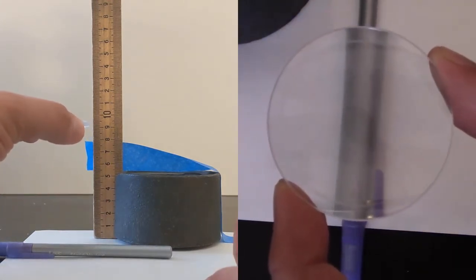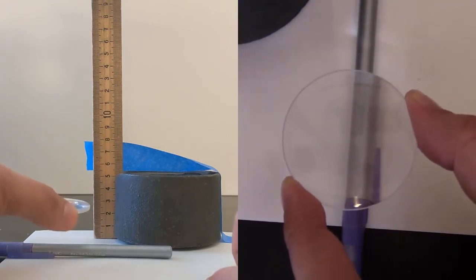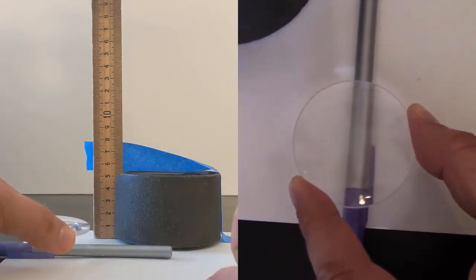As we get closer to the 10cm, what happens to the pen? And as we get closer to zero, what happens to the image of the pen in the lens?